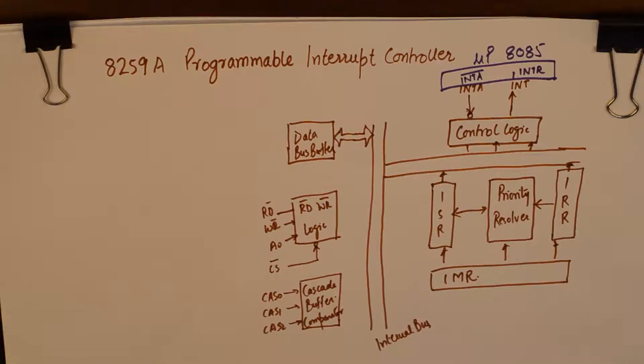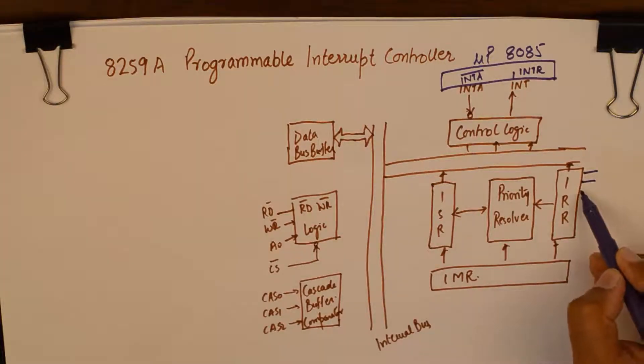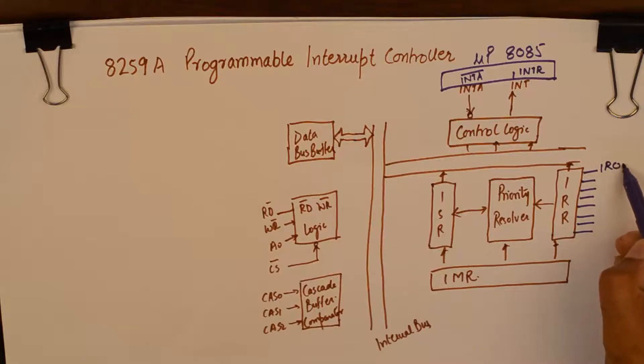Now what happens is 8259 gives us the capability of adding 8 additional interrupts and they are located here and they are named as IR0 to IR7.